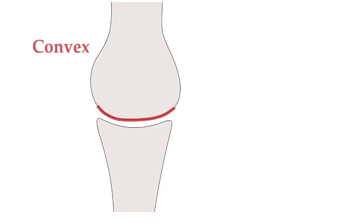We have a joint when two bony surfaces come in contact with one another. Although the depths may vary, one joint surface will be convex, or bow outwards — shown here in red — while the other joint surface will be concave, or bow inwards — shown here in gold.